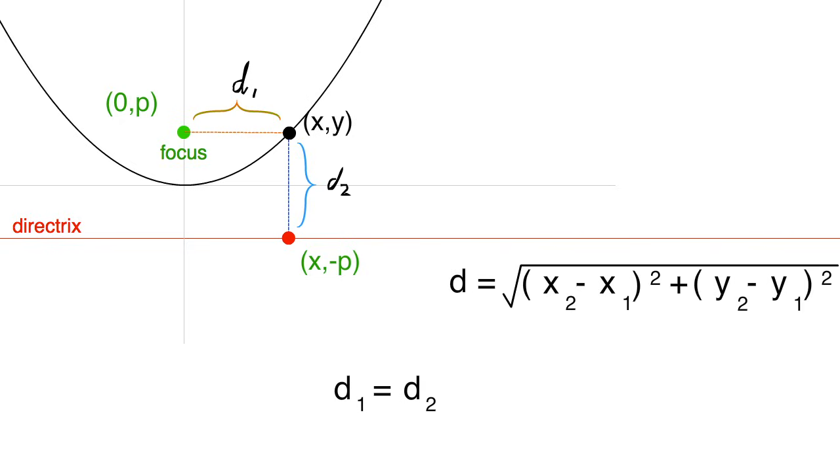Remember that the distance formula is equal to the square root of x2 minus x1 squared plus y2 minus y1 squared. What we want to do is use the coordinates of the endpoints of d1, which are (0,p) and (x,y), and substitute them into the distance formula.